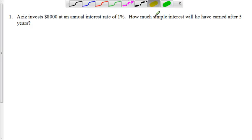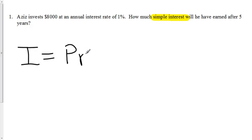The key word here is simple interest. This is different from compound interest, which we'll talk about later in the course. Simple interest is calculated using a formula: I equals PRT. That's P times R times T.